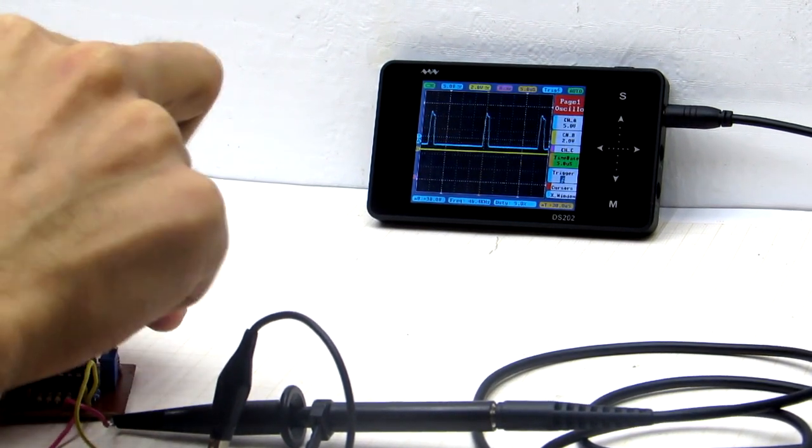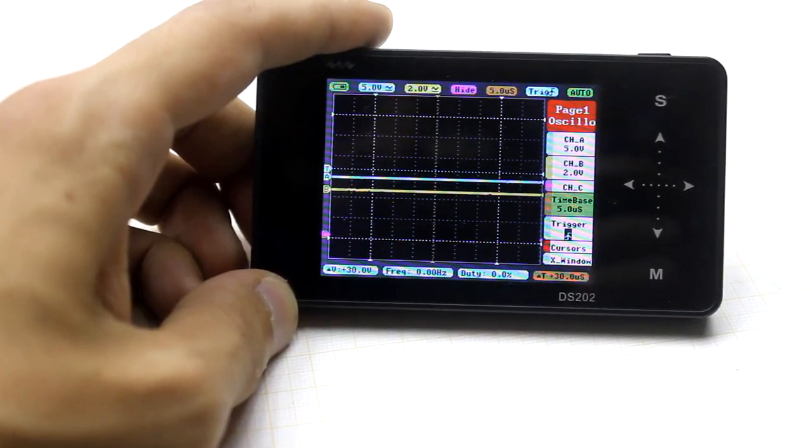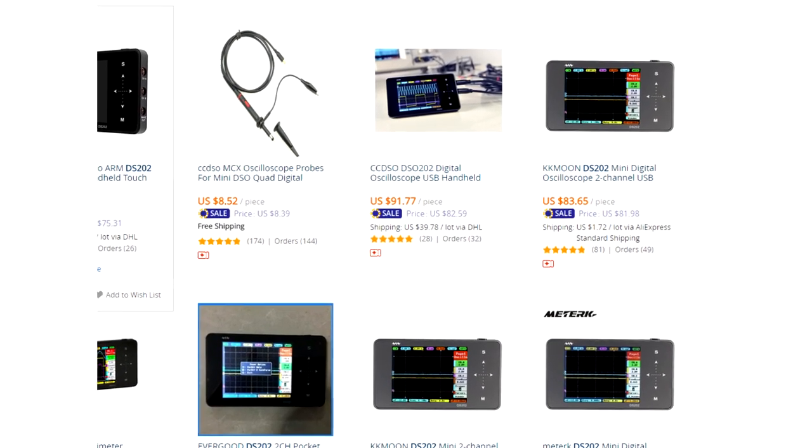The principle of control can be easily seen using an oscilloscope. For this, I use an excellent portable oscilloscope DS202, which I personally recommend. You can buy this by the link in the description. The price is around $100.